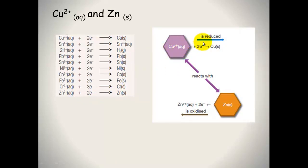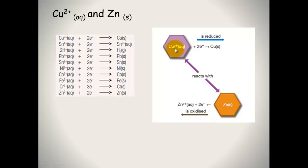And this is exactly what happens. Copper²⁺ is reduced to become copper solid, and it reacts with zinc solid to form Zn²⁺ ions. The zinc is oxidized, the copper²⁺ is reduced. Reduction is gain of electrons, oxidation is loss of electrons.